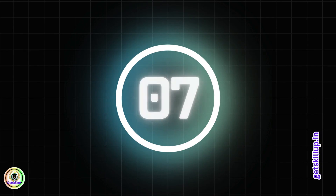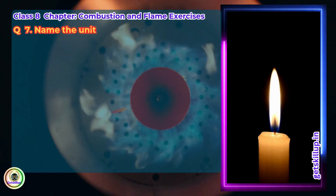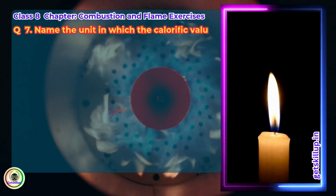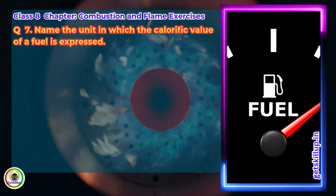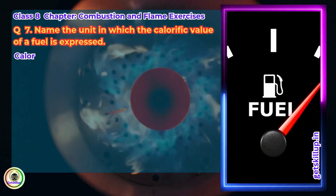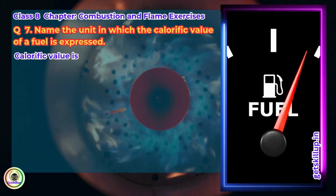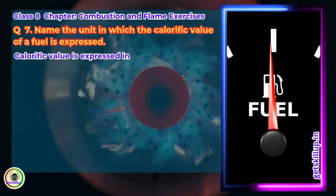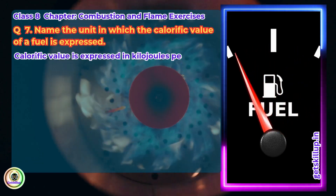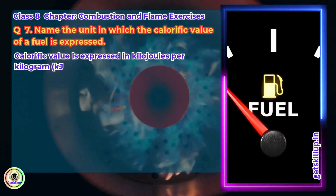Question 7: Name the unit in which the calorific value of a fuel is expressed. Answer: Calorific value is expressed in kilojoules per kilogram (kJ/kg).